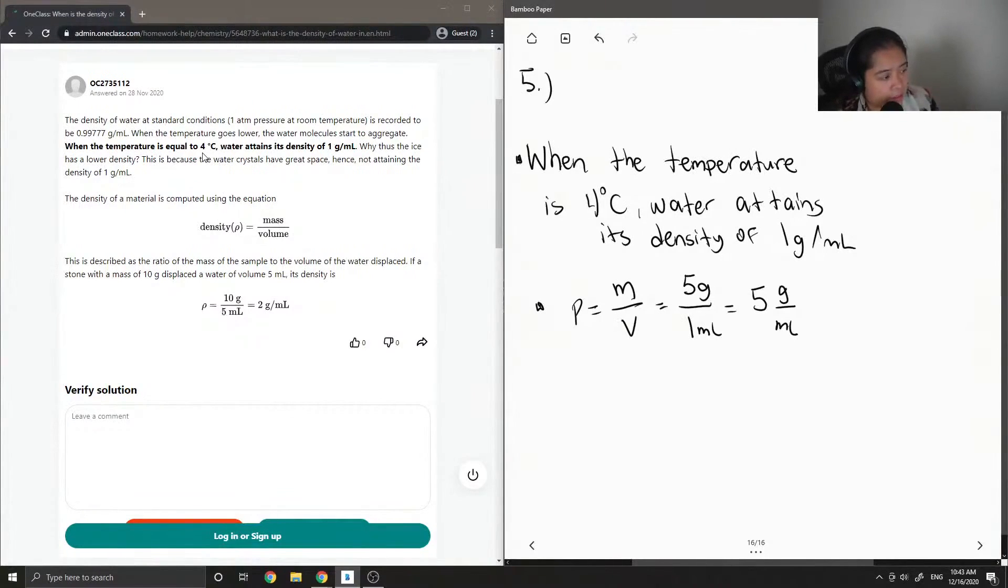Density of a material is computed using the equation density equals mass over volume. So going back to that ice question, since they have a much greater volume, when you divide mass divided by volume, ice tends to be less dense than water, liquid water.